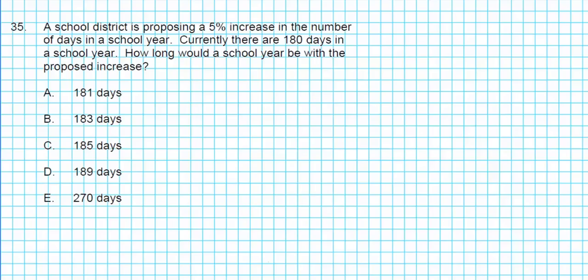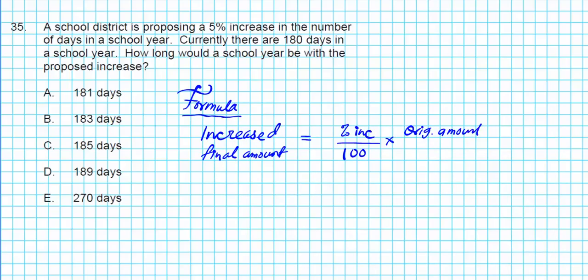So we're going to get started by writing down the formula for the computation. The formula for a percent increase is as follows. The increased final amount, the number of days in the school year, we're going to calculate the percent increase over 100 multiplied by the original amount. That gives you the amount increased and then add it to the original amount. So this computation will help you determine the increased amount.